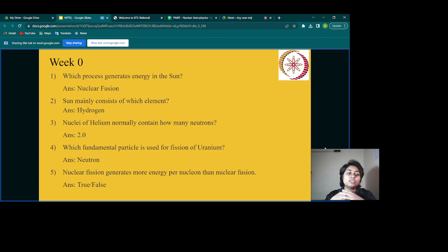Nuclear fusion and nuclear fission are concepts you need to know in detail. The second question is: the Sun mainly consists of which element? That is hydrogen. Then from hydrogen we will get to helium and all the steps in the chain you will learn in this course. Third question: nuclei of helium normally contain how many neutrons? The answer is two.